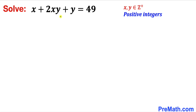Welcome to pre-math. In this video we are going to solve the given equation x plus 2xy plus y equals 49. We are going to solve for x and y, keeping in mind that x and y are positive integers.